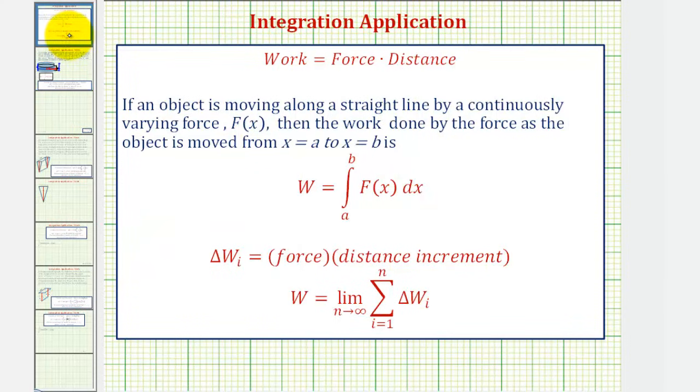For a quick review, in general, work is equal to force times distance. But if an object is moving along a straight line by a continuously varying force f(x), then the work done by the force as the object is moved from x equals a to x equals b is given by the definite integral of f(x), integrated with respect to x from a to b.